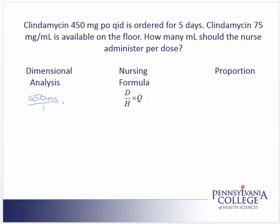We would like to cancel the label of milligrams, so in our next fraction, we'll need to put milligrams on the bottom of the fraction. The available amount is 75 milligrams per one milliliter. The milligrams will cancel. My answer will be in milliliters, so I'm ready to do the math. On my calculator, I take 450 divided by 75, and I get an answer of six milliliters.